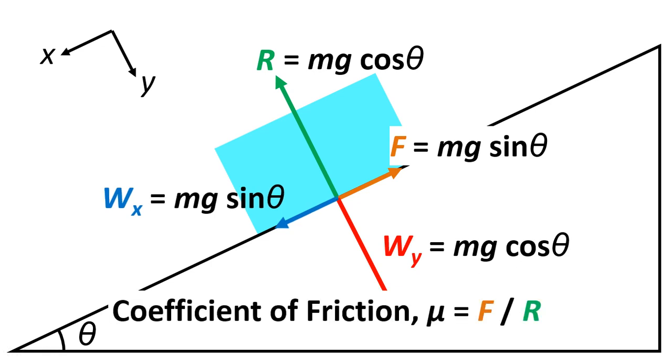Now we know that the coefficient of friction equals F over R. Instead of writing F and R, we can write in the values for these based on mg and theta. Then m and g will cancel because it's on the top line and the bottom line.